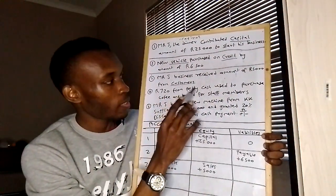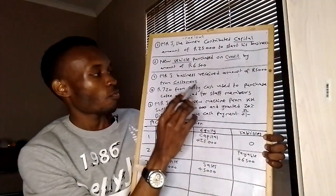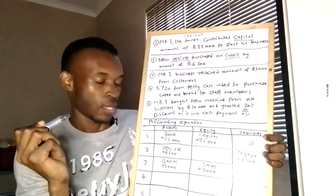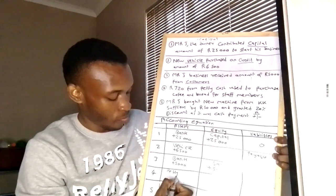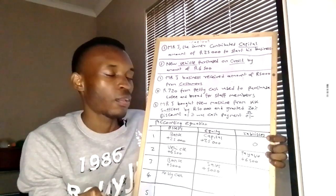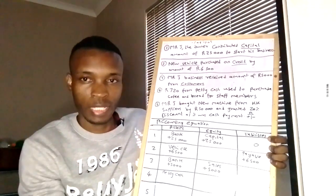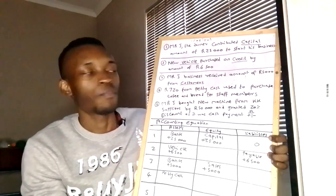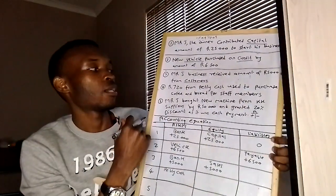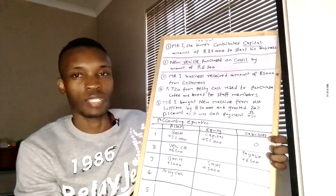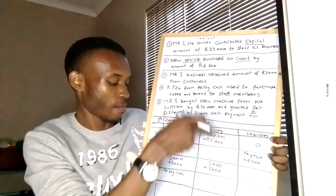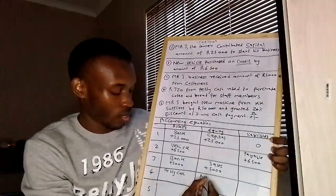Number four: $720 from petty cash was used to purchase coffee and bread for staff members. Petty cash is like a bank — it's an asset. Petty cash is a small amount we use to purchase smaller items or give customers change. The purchase of coffee and bread for staff is called a refreshment expense, which is on the income statement, so it falls under equity.